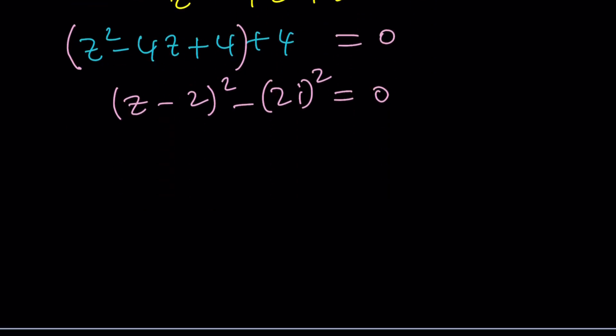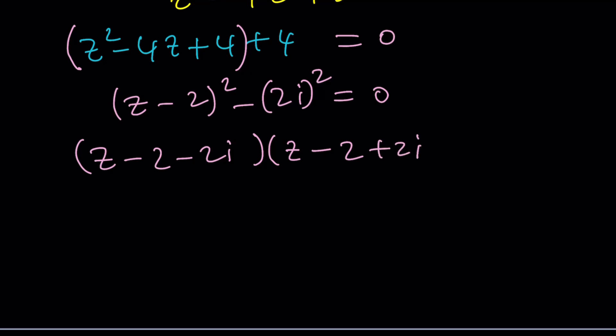And this is nothing but difference of two squares. Right? So we can write this as z minus 2 minus 2i times z minus 2 plus 2i. Great. Just change the sign here. Now set it equal to 0 of course and from here you're going to get the z values easily. Easy. So z is going to be 2 plus 2i or z is going to be 2 minus 2i.